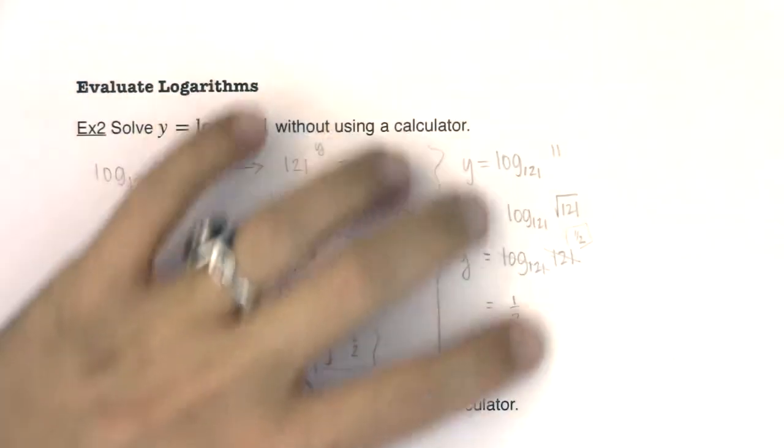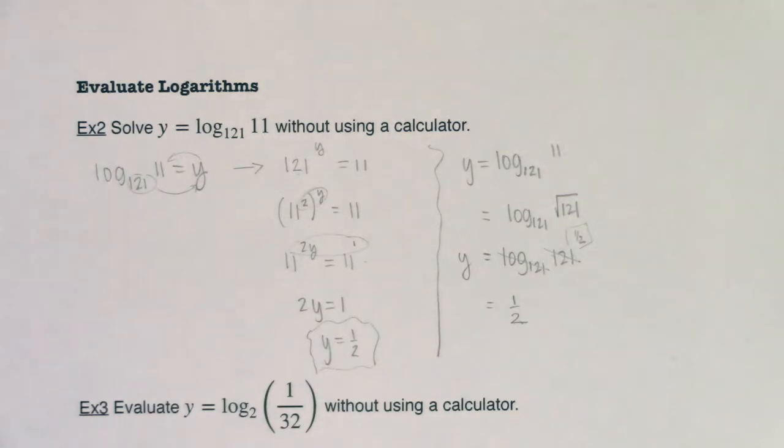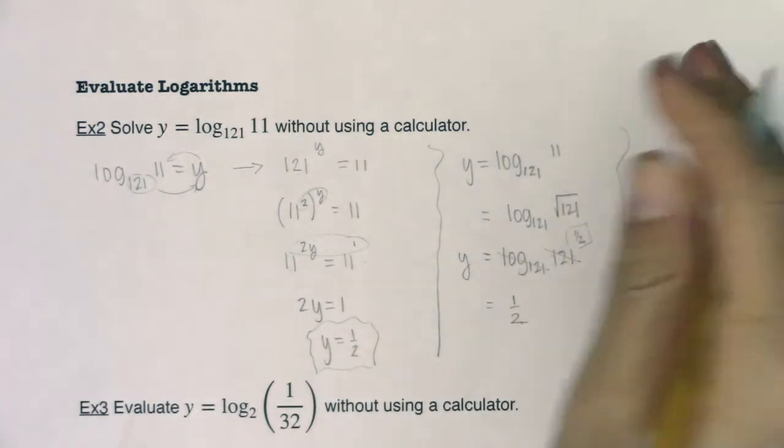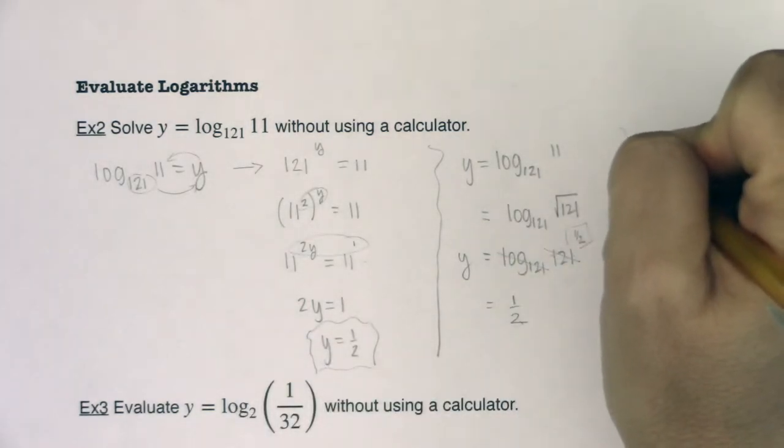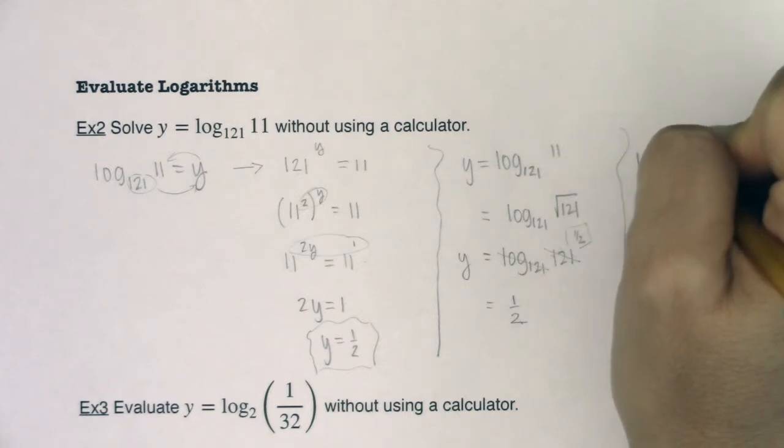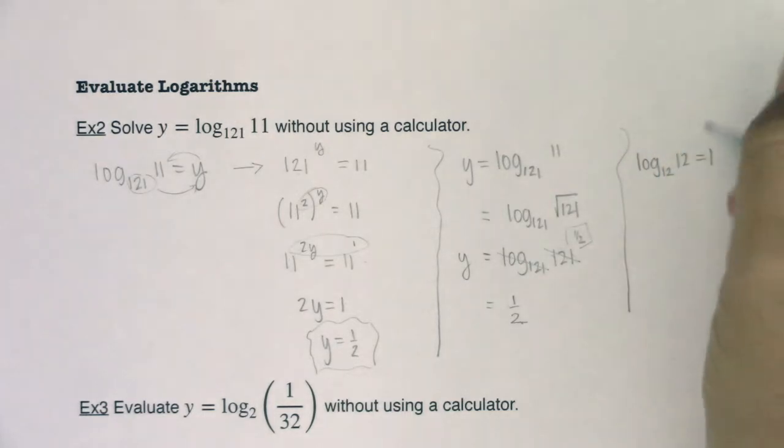So I show you this because we want to get more and more comfortable with properties of logarithms. So just to show you some of the special properties we've talked about between example 1 and example 2, we talked in example 1 about how log base 12 of 12 was equal to 1. When you have the same base for your logarithm as the base of the power,